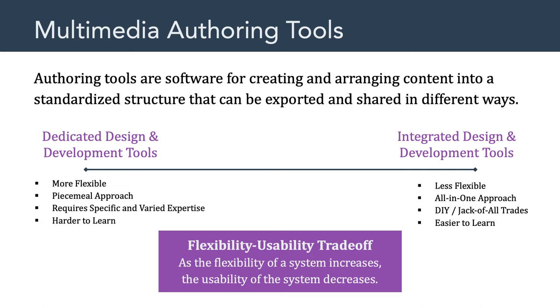So what we see in terms of this authoring tool continuum is a flexibility usability trade-off: as the flexibility of the system increases, the usability decreases — in other words, it gets harder to use. Depending on where you want to be on this continuum and the technical skills that you have, that's going to determine what set of tools you will look at. In a college of education, most students are only going to take a course or two related to multimedia development, so we want to look at tools that are a little bit easier to use — more off-the-shelf products. With that in mind, I want to talk to you about H5P.